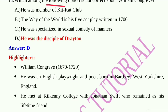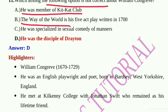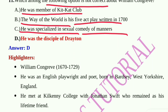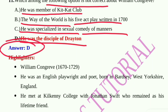Question number 10: Which among the following is not correct about William Congreve? Option A: He was a member of the Kit-Cat Club. Option B: The Way of the World is his five-act play written in 1700. Option C: He was specialized in sexual comedy of manners. Option D: He was the disciple of Dryden. Option D is the correct answer — he was not the disciple of Dryden.